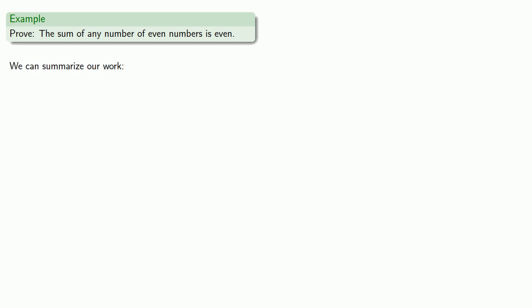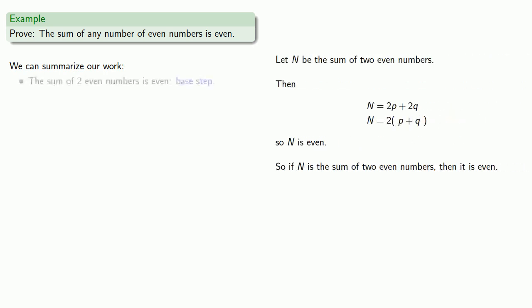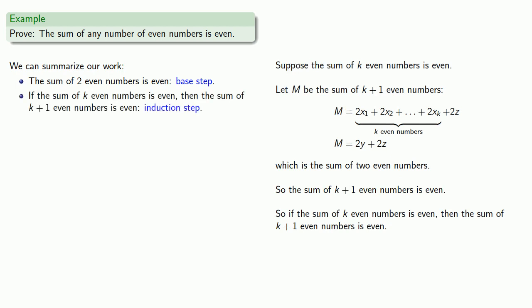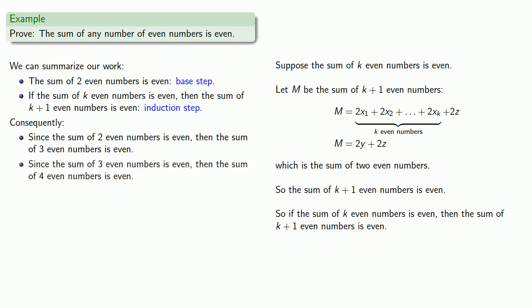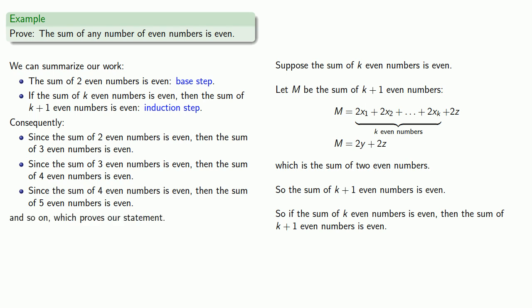We can summarize our work. The sum of 2 even numbers is even — that's the base step. Then if the sum of k even numbers is even, then the sum of k+1 even numbers is even — that's our induction step. Consequently, since the sum of 2 even numbers is even, then the sum of 3 even numbers is even; since the sum of 3 is even, then the sum of 4 is even; since 4 is even, then 5 is even, and so on — which proves our statement.